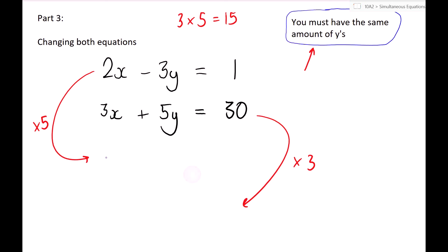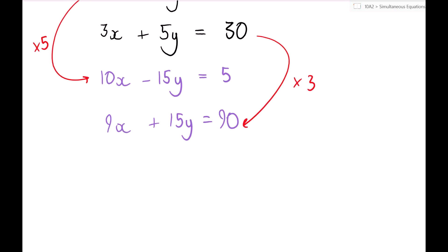So, working this out. 2x times 5 is 10x. 3 times 5 is 15. So we minus 15y. And 1 times 5 is 5. Doing the same here. Times them by 3. 3 times 3 is 9. 5 times 3 is 15. And 30 times 3 is 90. So again, we've got the same number of y's. The signs are different. If we have different signs, that means we are adding these together. So, 10x plus 9x gives me 19x. The y's cancel out. And 5 plus 90 is 95.